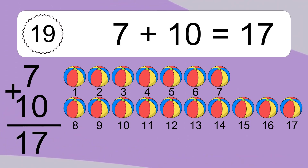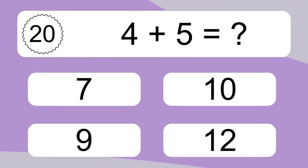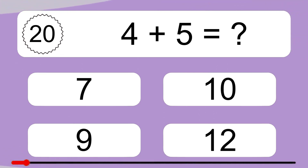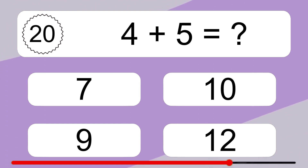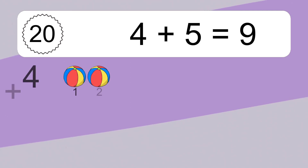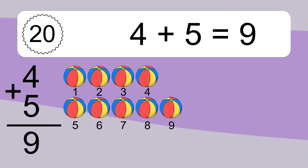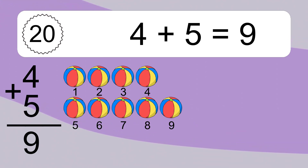4 plus 5 equals what? 4 plus 5 equals 9. Let's count it: 1, 2, 3, 4, 5, 6, 7, 8, 9.